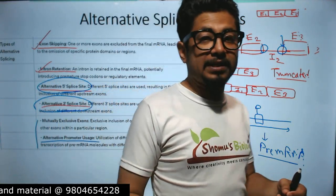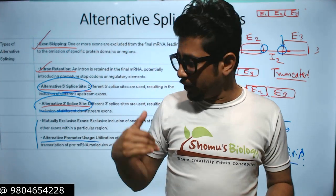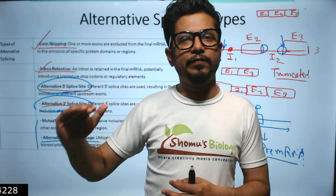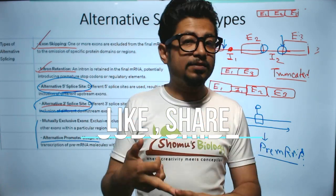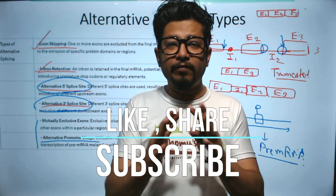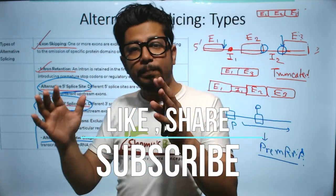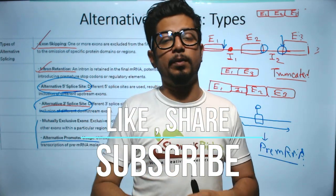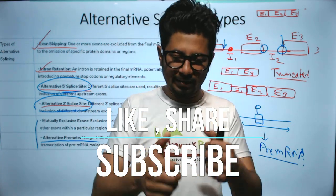That's all about alternative splicing. If you found this useful, please hit the like button, share this video with your friends, and subscribe to the channel. Watch all the videos in this series — from 5' capping, polyadenylation, self-splicing, spliceosome-mediated splicing, alternative splicing, and RNA editing — to understand every aspect of RNA biology, which is an important topic for many PhD entrance examinations.